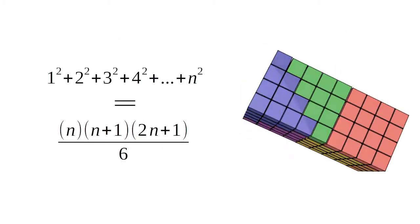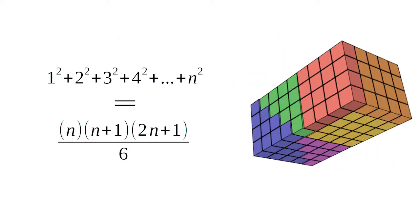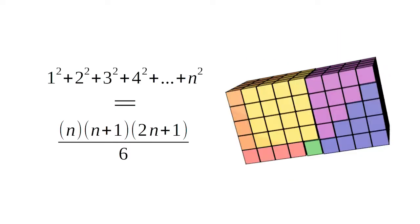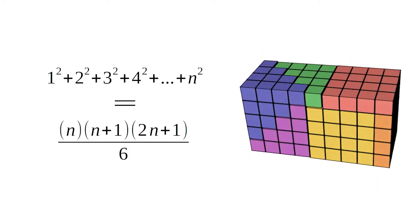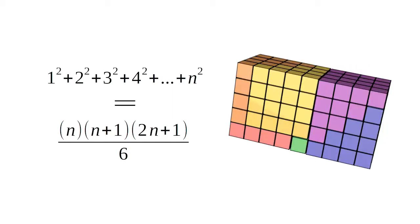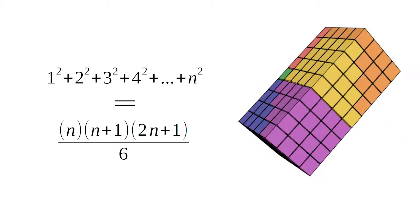Before we do that, take a look at this rectangular prism. It is made up of six colors and many smaller cubes. It will help us in understanding the formula for the sum of squares.